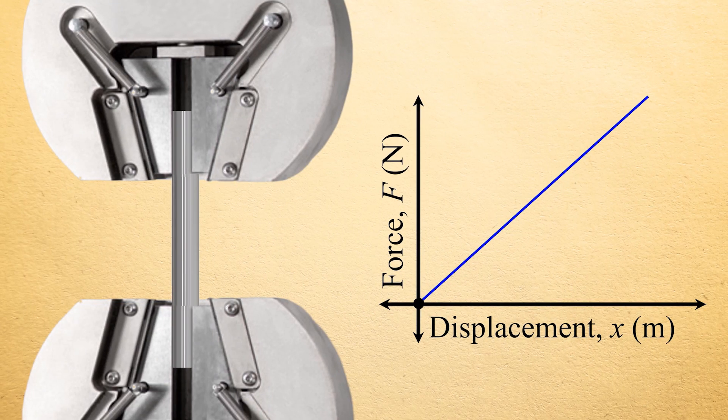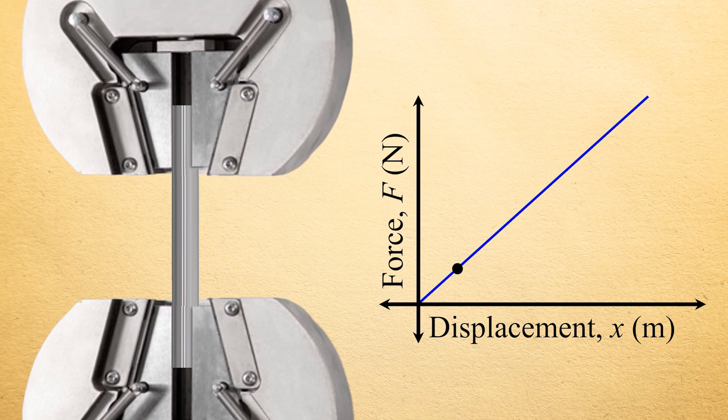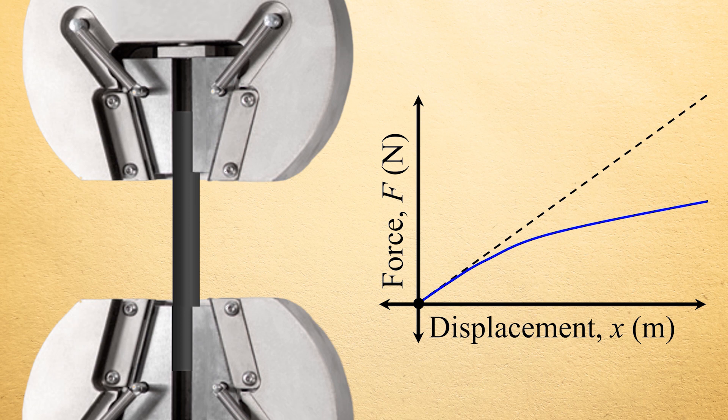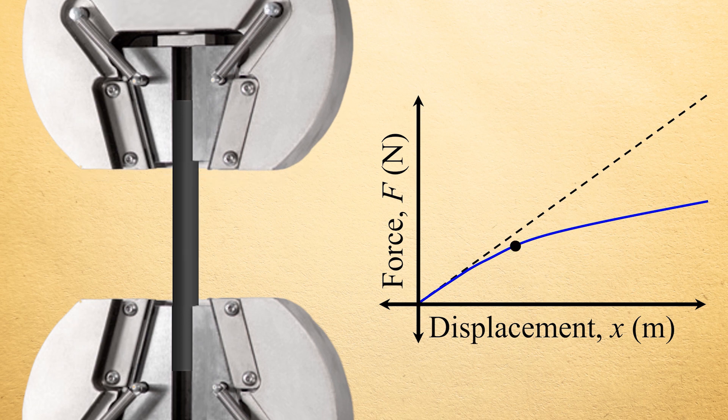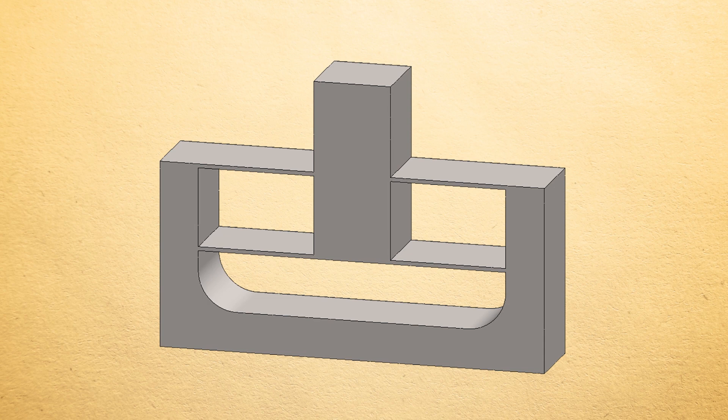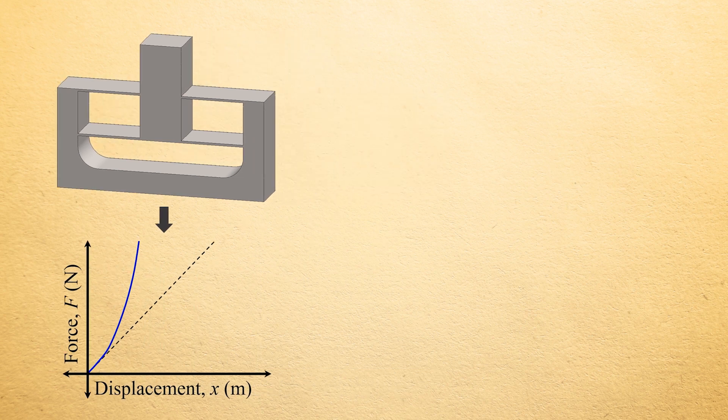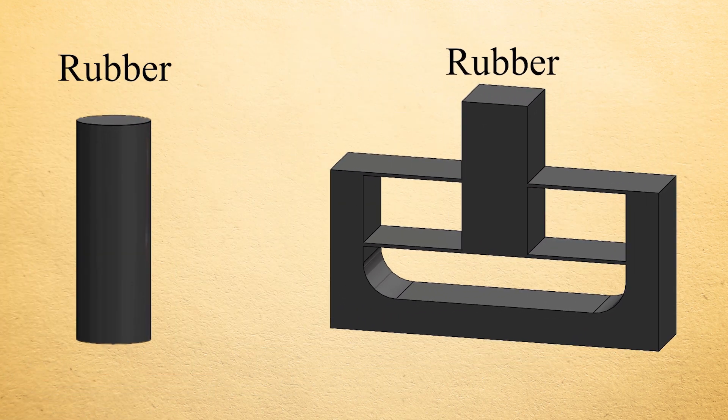Whereas the elastic properties of most metals are linear and thus remain constant as they are strained, some materials, such as soft elastomers, exhibit non-linear elastic properties that change as a function of the material's deformation. Thus, if a spring were designed with a topology and geometry that if made of metal would produce an exponentially growing non-linear force displacement plot like this one, but the spring were instead made of a non-linear elastic material, such as rubber,